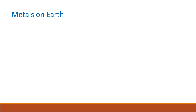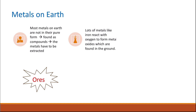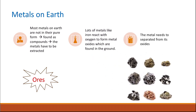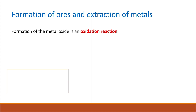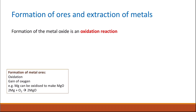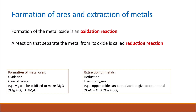Moving on to metals on Earth and how we extract metals from their ores. Metals do not exist in pure form on Earth — they are usually reactive and tend to react with oxygen to form oxides, called metal ores. The formation of ores is oxidation (gain of oxygen), like magnesium + oxygen → magnesium oxide. The reaction that separates the metal from its oxide is reduction, because there is a loss of oxygen.